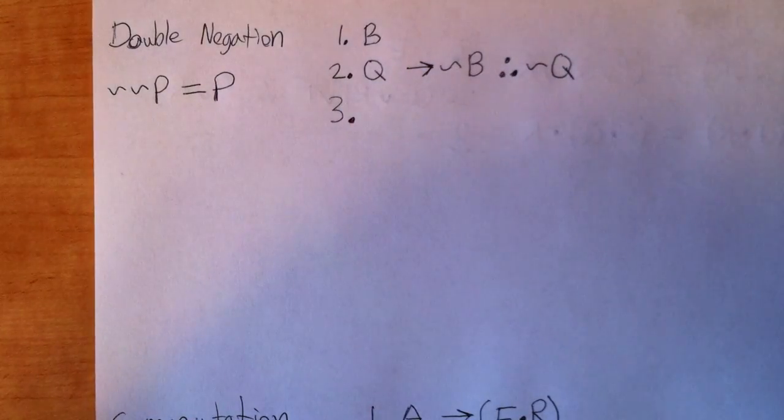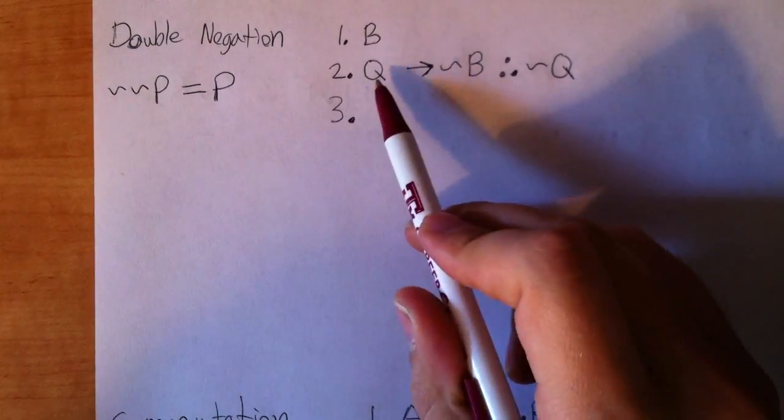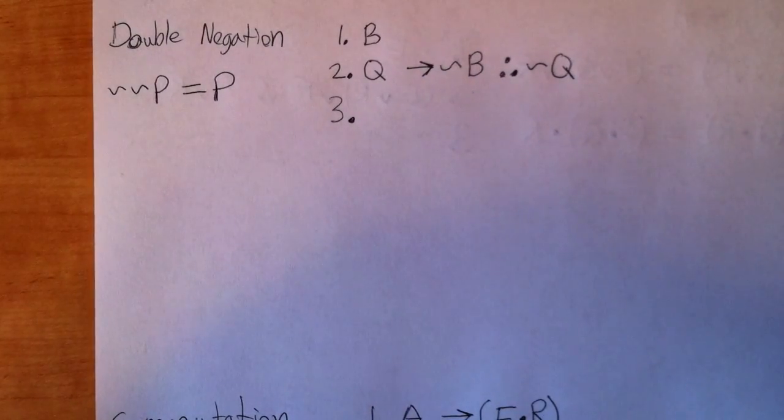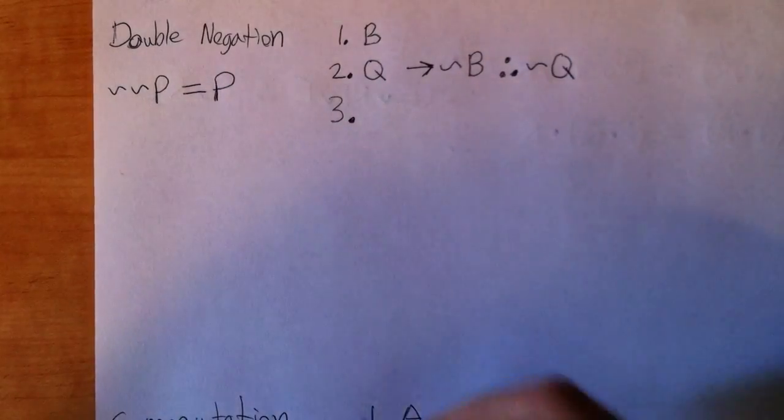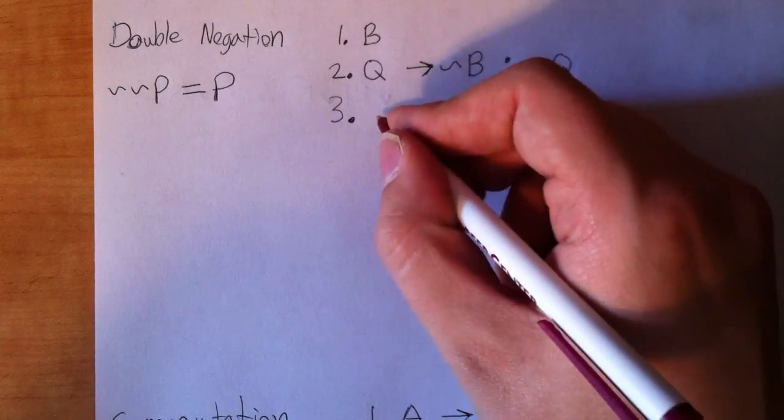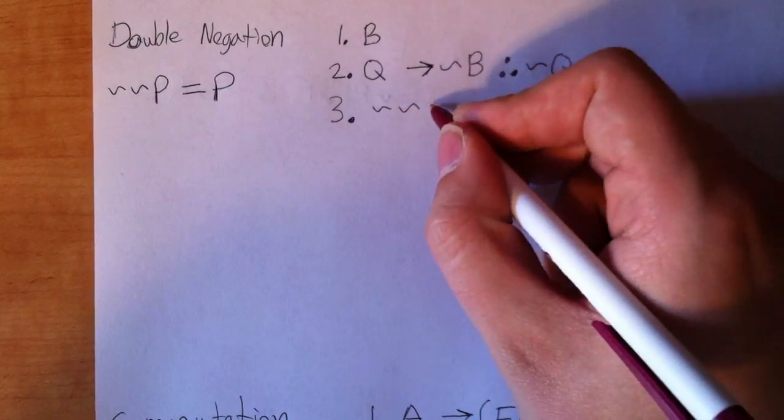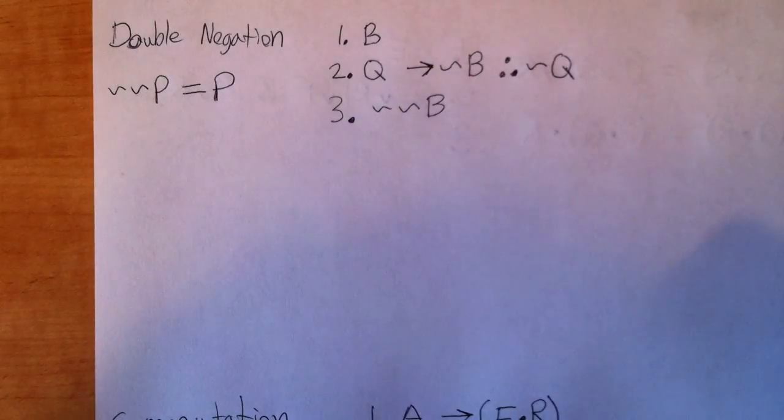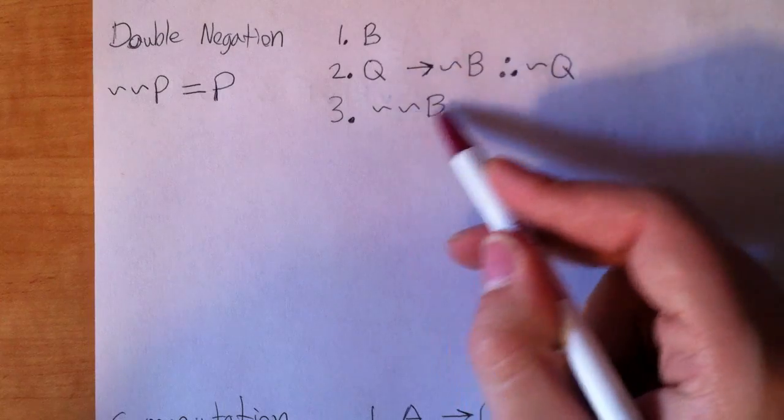So looking at my proof right here, I say, hmm, what can I do? Well, I want tilde Q, but how'd I get it? Well, I don't know any other ways right now. Maybe I can do something with double negation. This looks promising right here. I almost have a match for modus tollens. Let me try tilde tilde B.